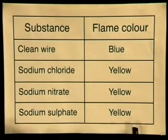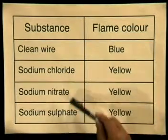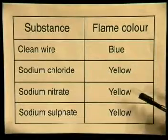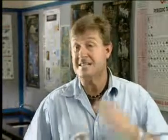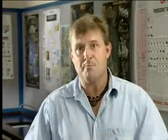Let's now check all the observations we've made. At the end of this experiment, your observation table should look something like this. I am sure you will agree that all the sodium salts burnt with a bright yellow-orange flame. We can see that the different anions of the salts played no role in influencing the colour that we observed. Secondly, all the sodium salts burnt with the same yellow-orange colour.